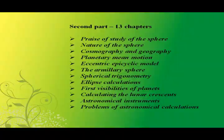The second part of Siddhanta Shiromani contains 13 chapters on the sphere, covering topics such as the study of the sphere, eccentric epicyclic model, the armillary sphere, spherical geometry, ellipse calculations, first visibility of planets, calculation of the lunar presence, astronomical instruments, and problems of astronomical calculations.